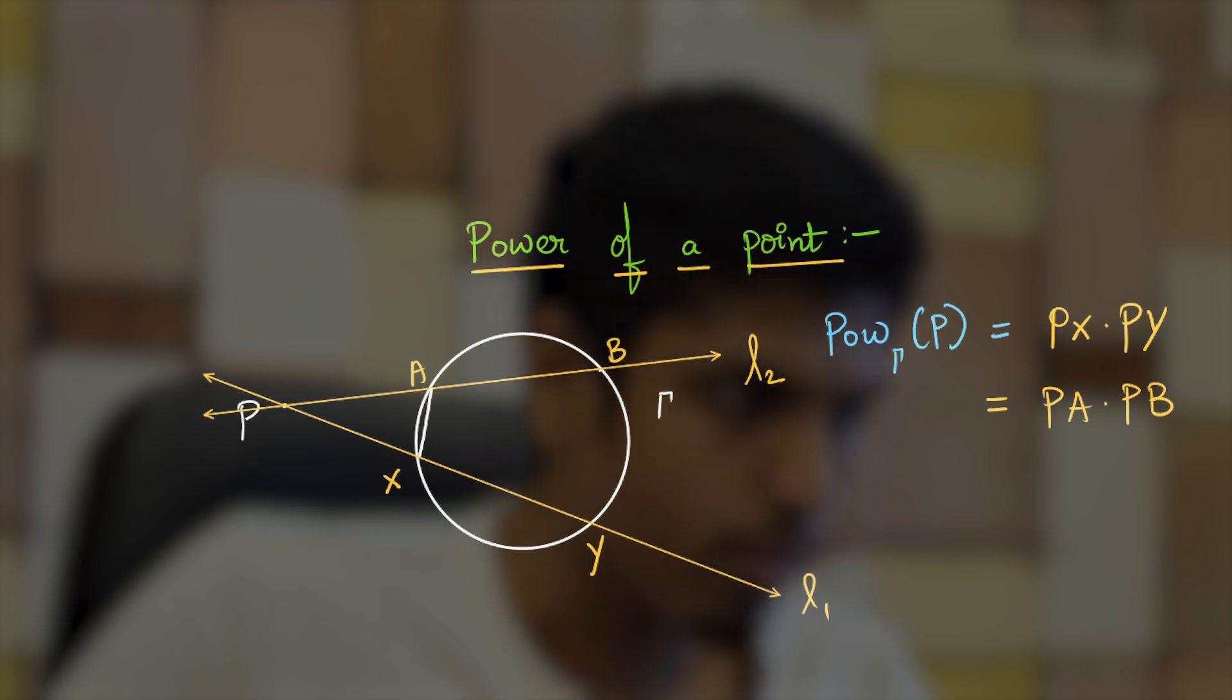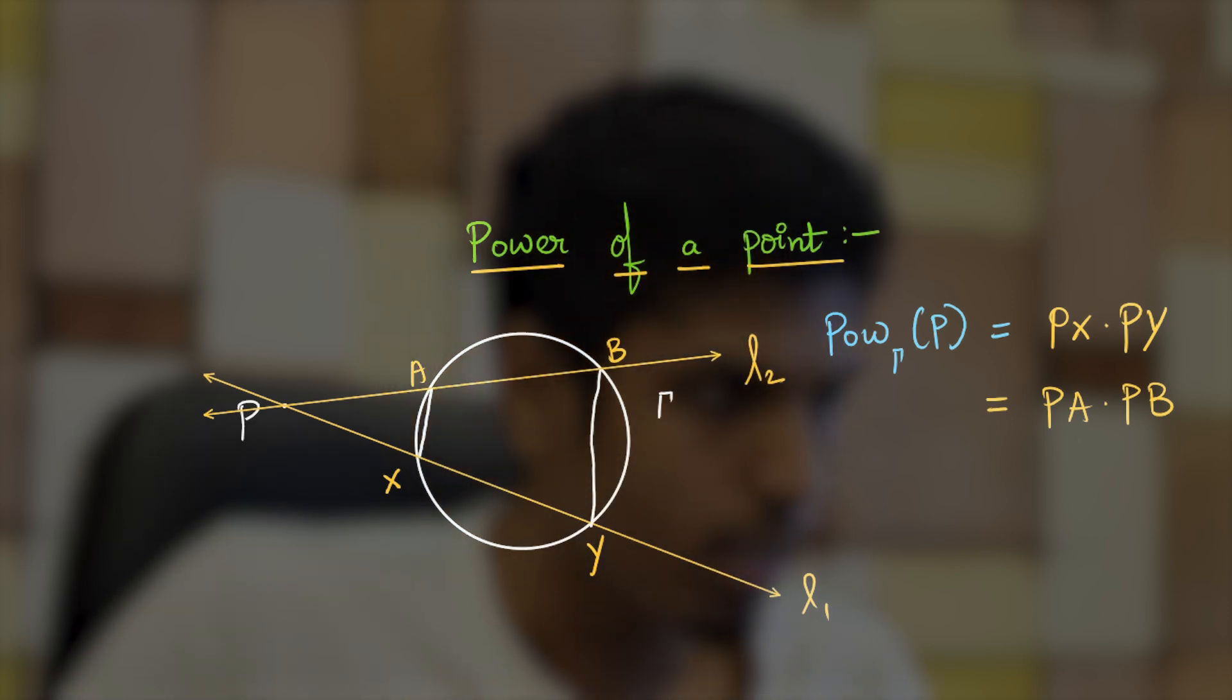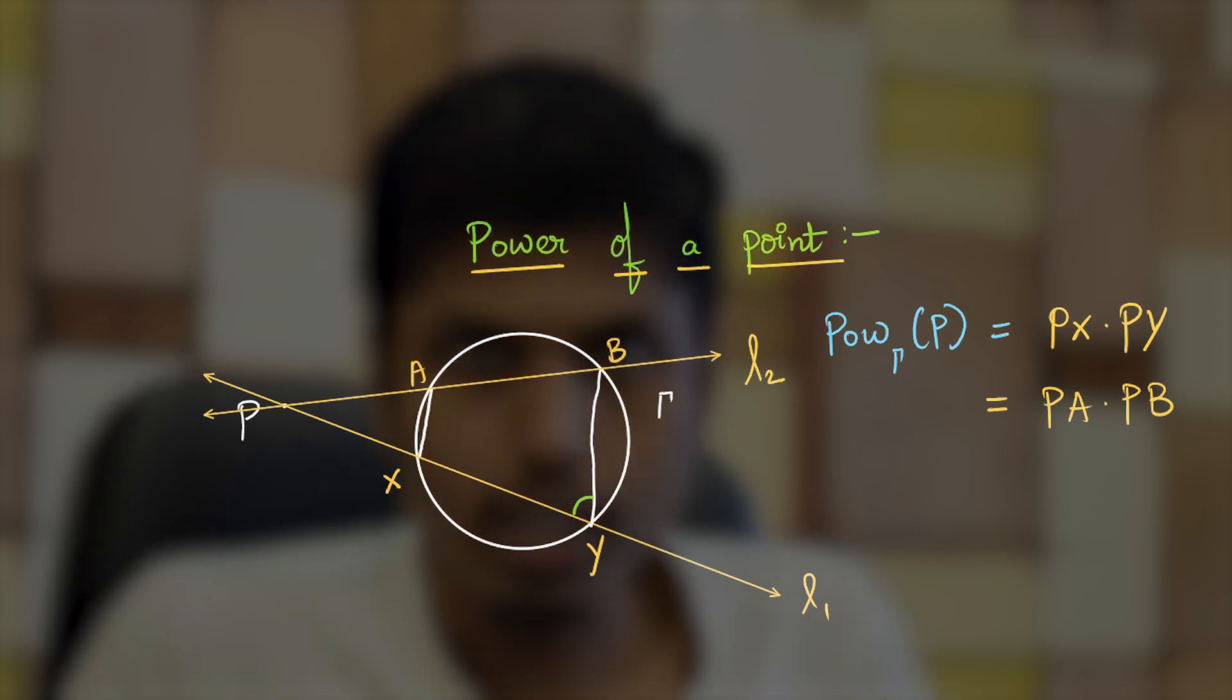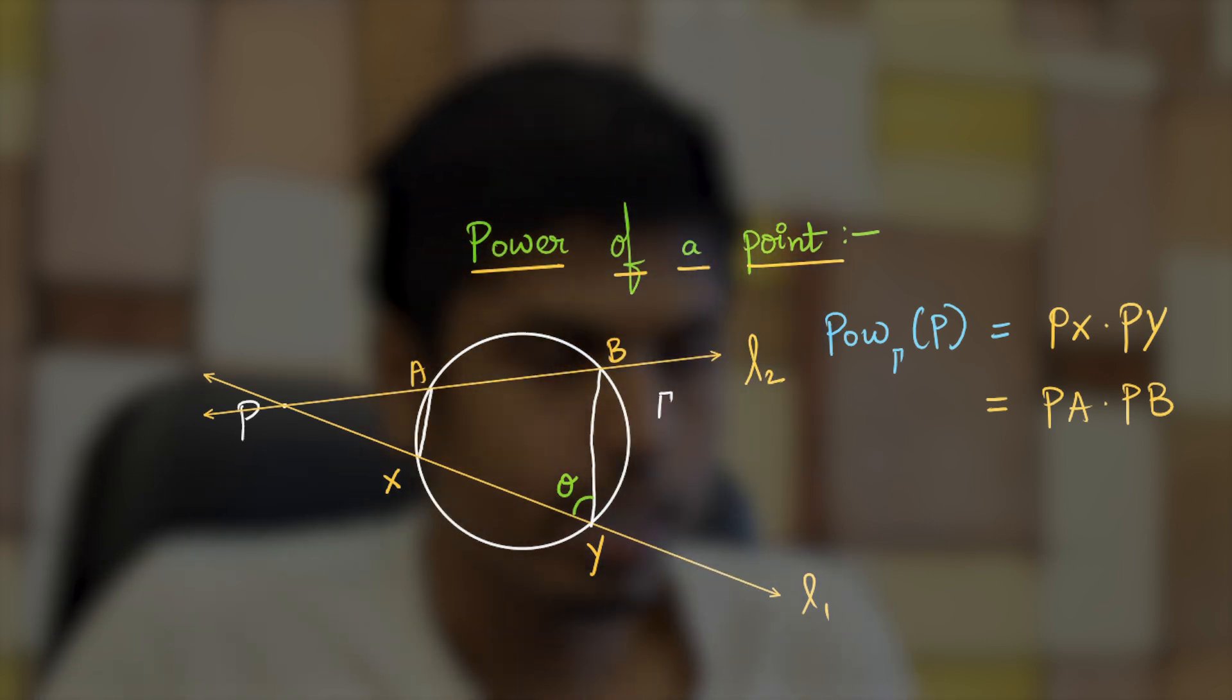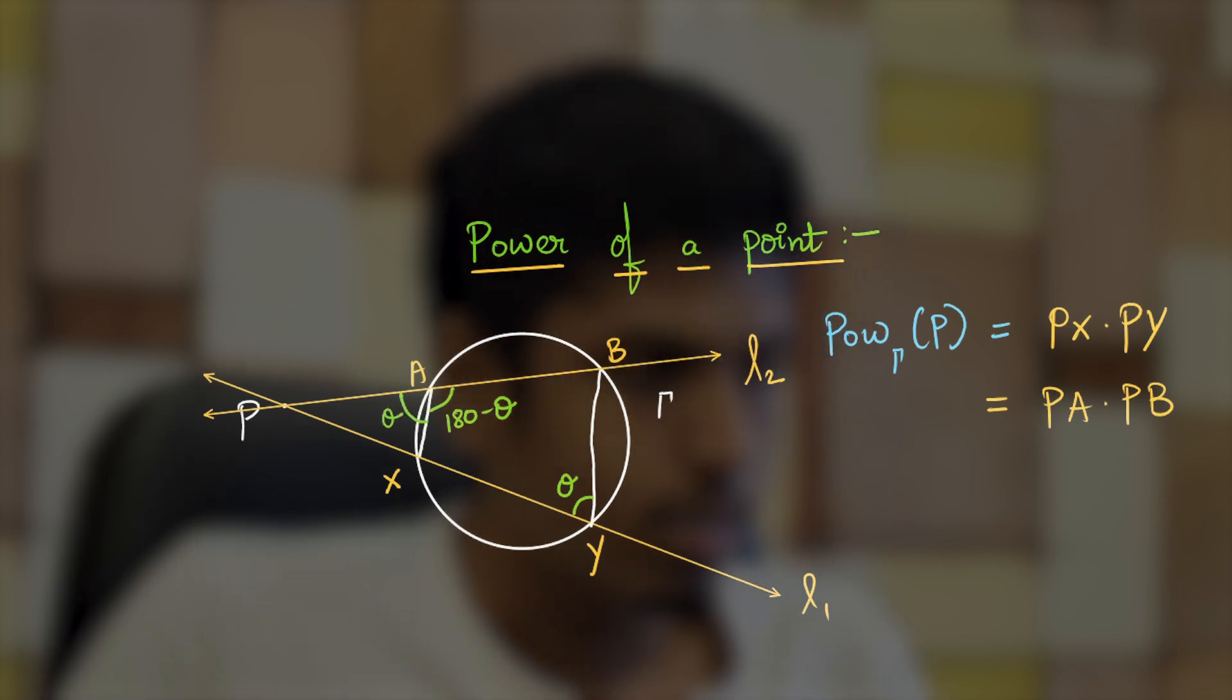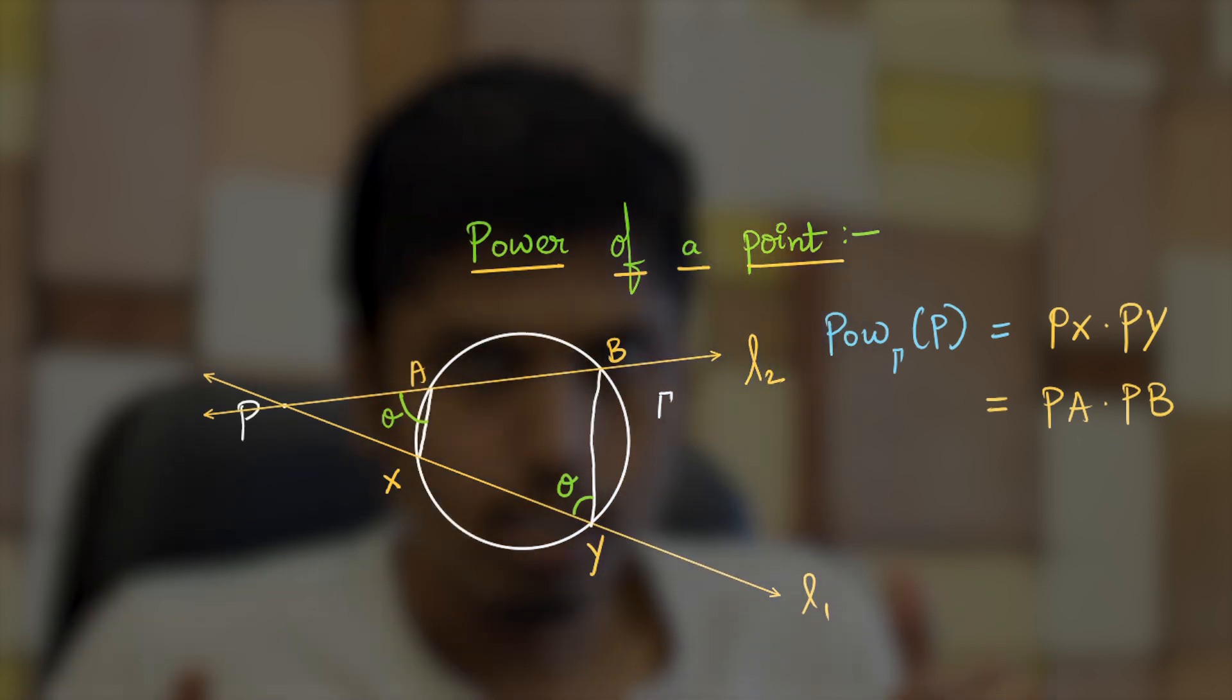Suppose you consider the chords AX and BY of this circle. Since opposite angles of a cyclic quadrilateral are supplementary - meaning they add up to 180 degrees - if angle BYX is theta, then angle BAX would be 180 minus theta. But in turn that implies that angle PAX is theta. See how beautiful this is. Angle formed at one end of the cyclic quadrilateral equals the angle in the exterior of the other opposite end of the quadrilateral.